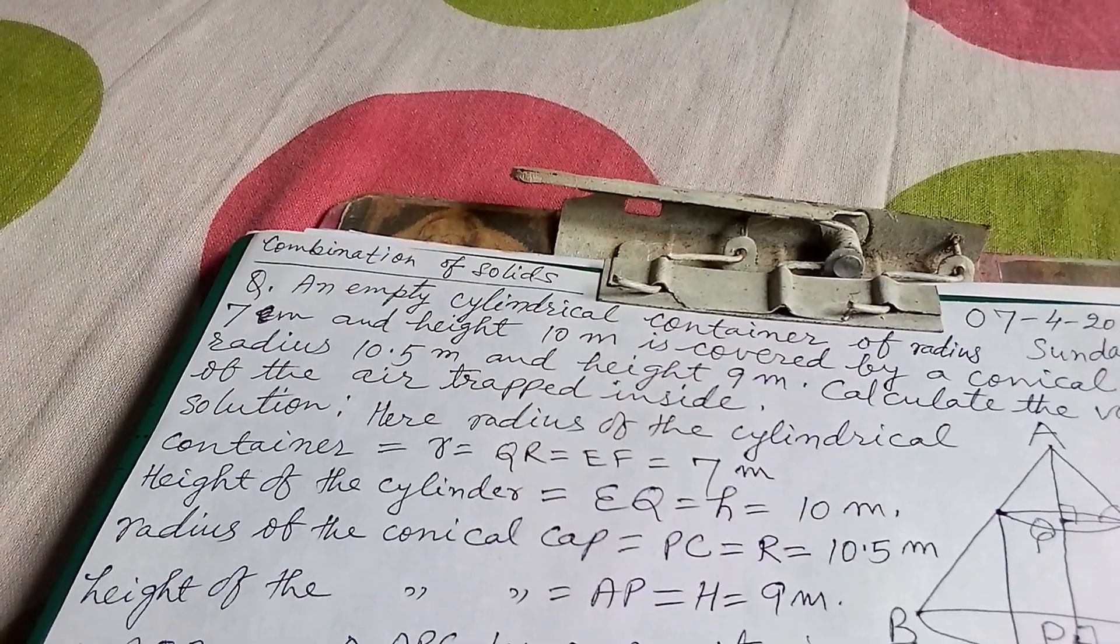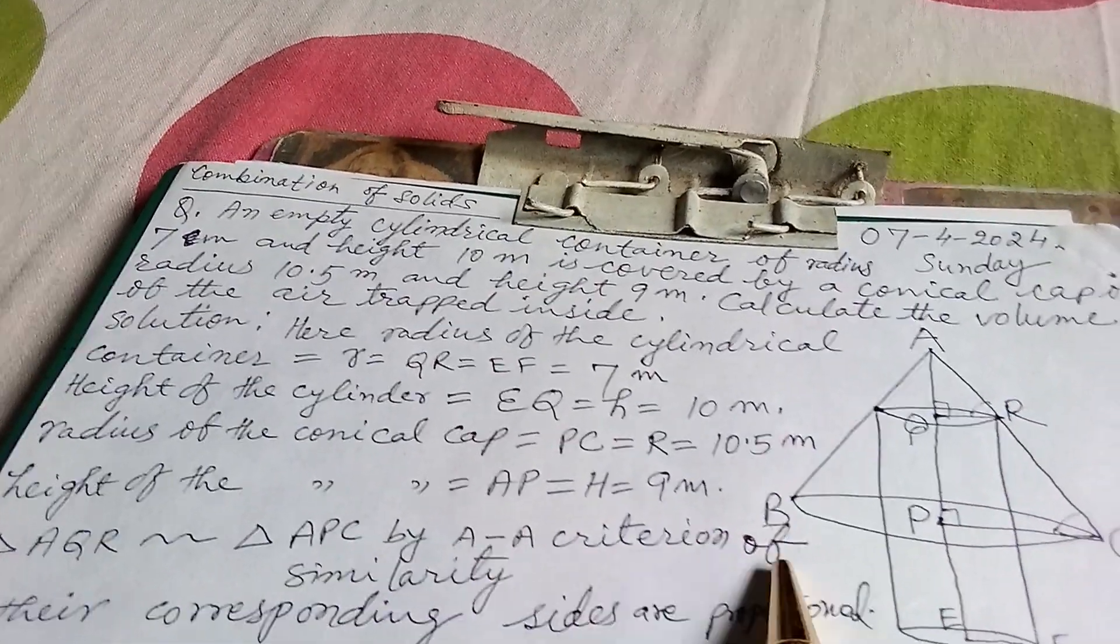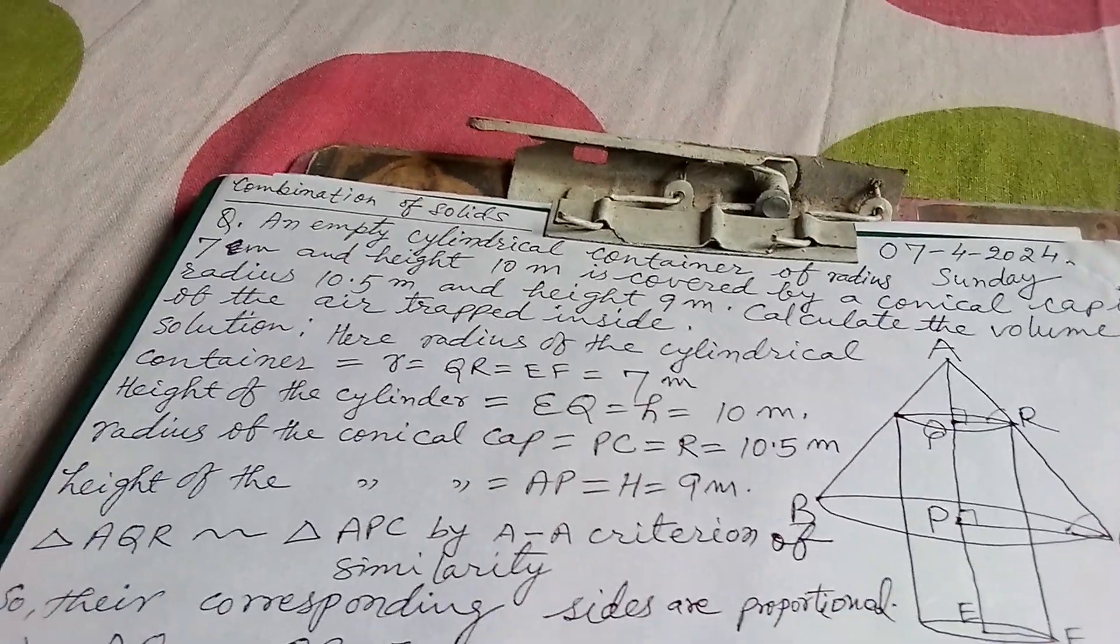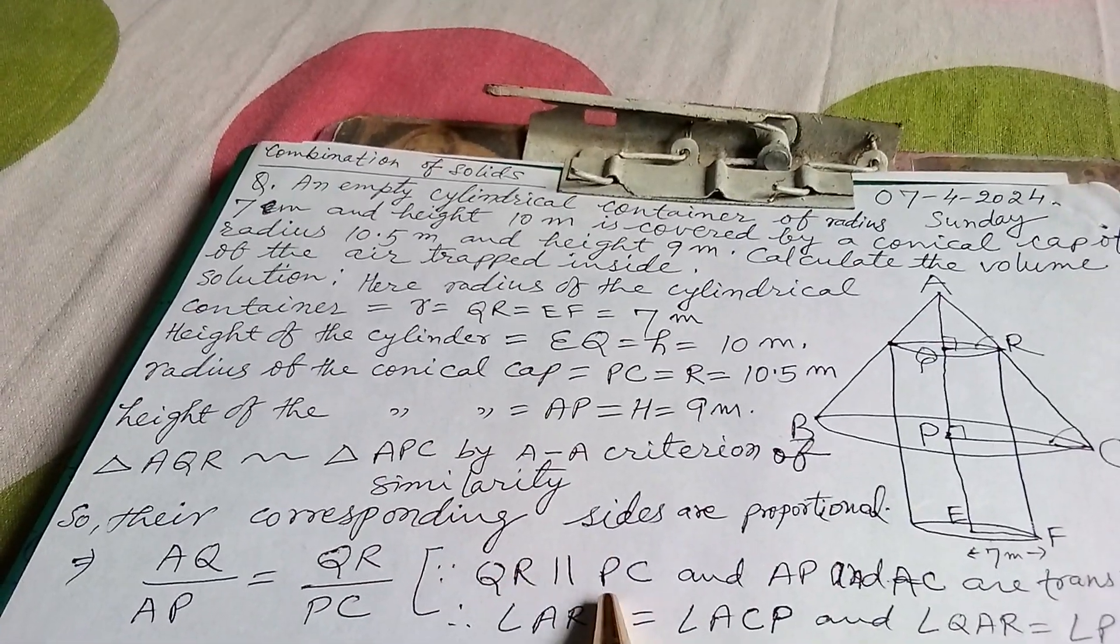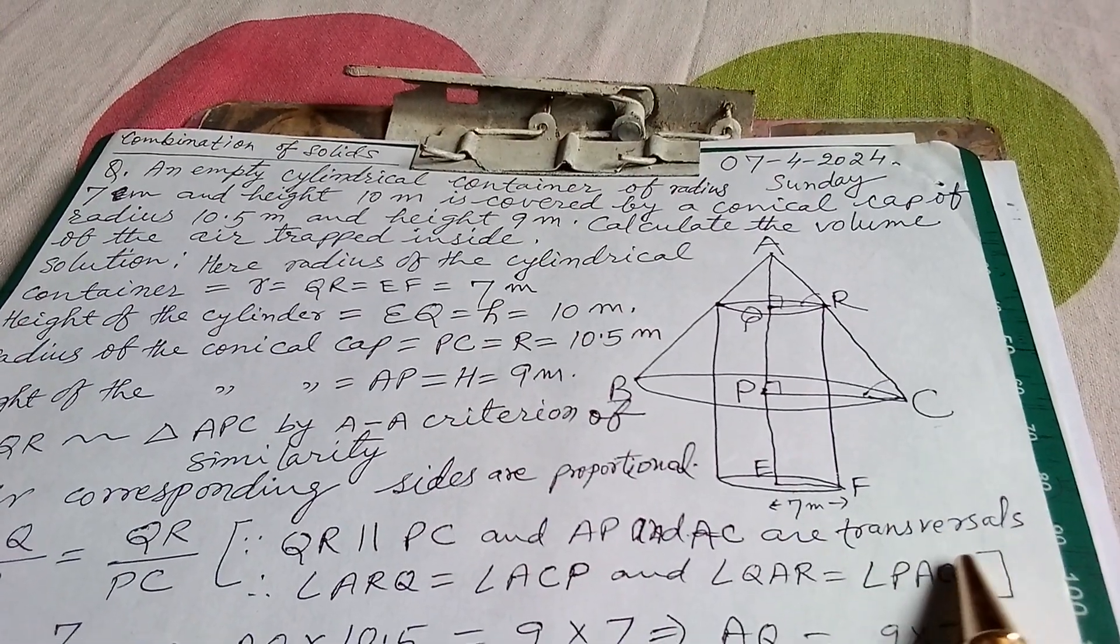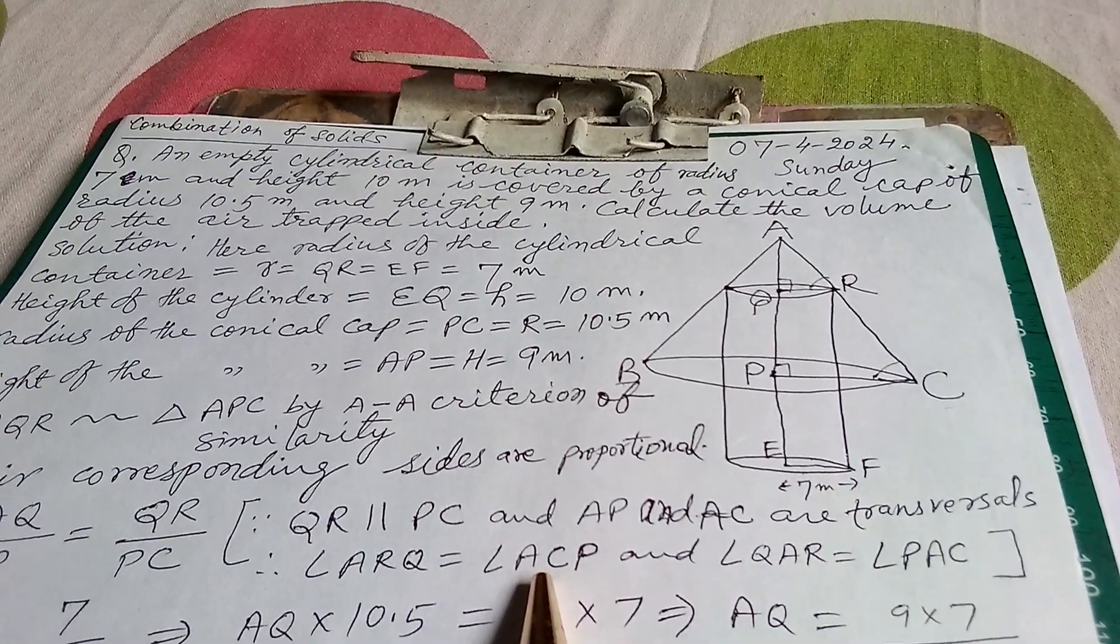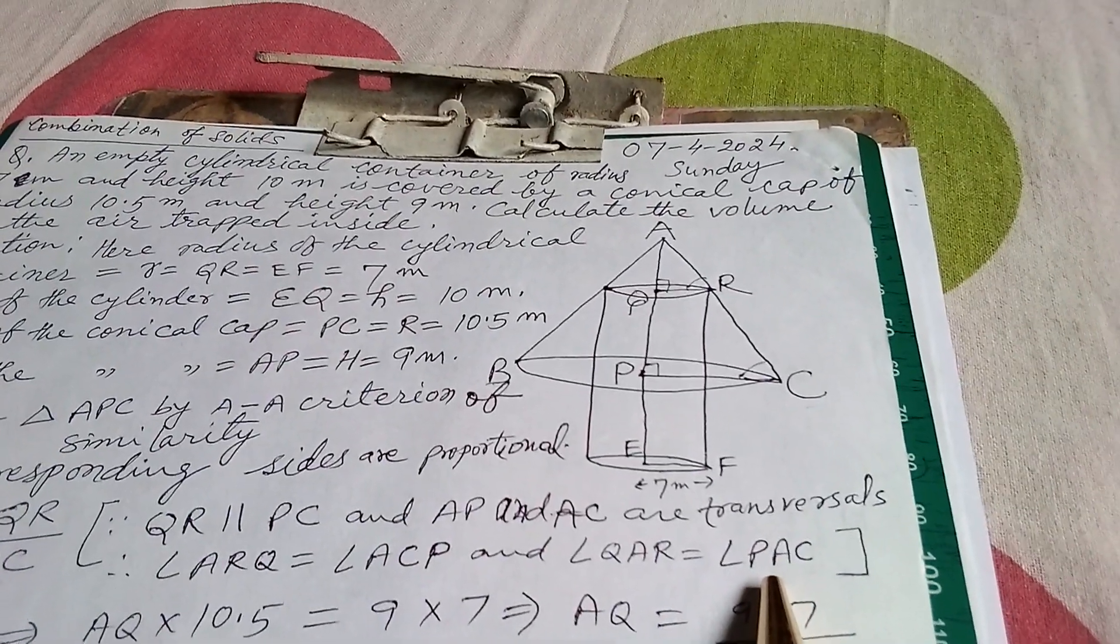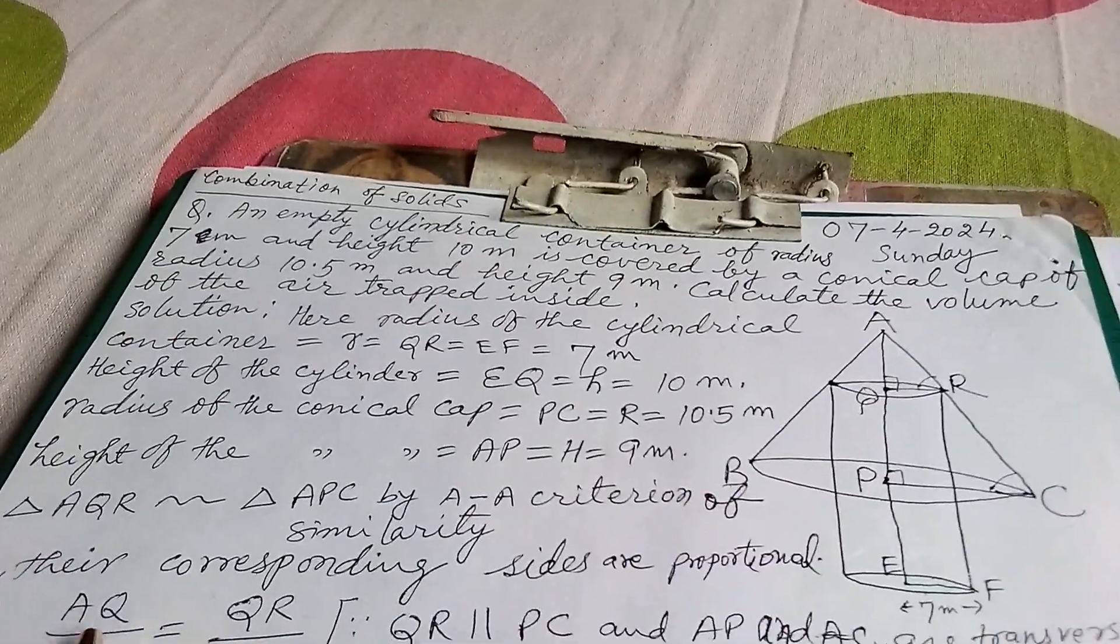Triangle AQR is similar to triangle APC by angle-angle criterion of similarity, so their corresponding sides are proportional. Since QR is parallel to PC and AP and AC are transversals, angle ARQ equals angle ACP (corresponding angles), and angle QAR equals angle PAC (common angles). So two angles are equal, therefore the third angle will be equal and that's why these two triangles are similar.